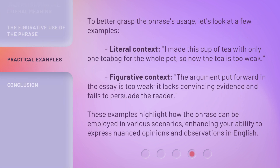To better grasp the phrase's usage, let's look at a few examples. Literal context: 'I made this cup of tea with only one tea bag for the whole pot, so now the tea is too weak.' Figurative context: 'The argument put forward in the essay is too weak — it lacks convincing evidence and fails to persuade the reader.' These examples highlight how the phrase can be employed in various scenarios, enhancing your ability to express nuanced opinions and observations in English.